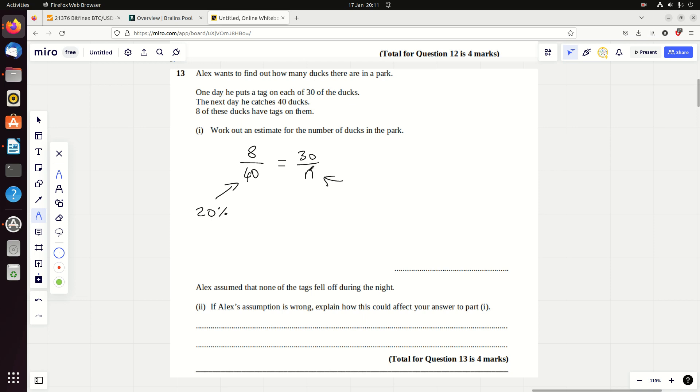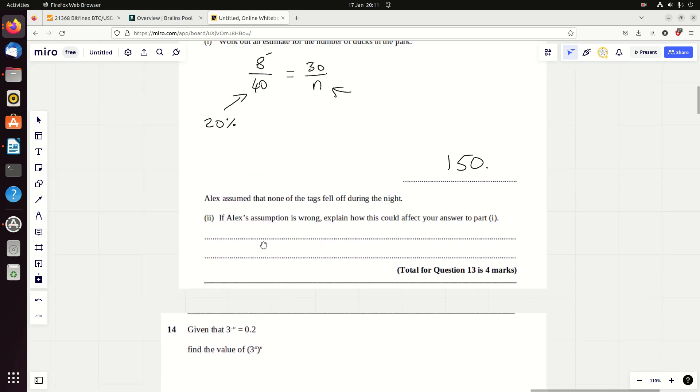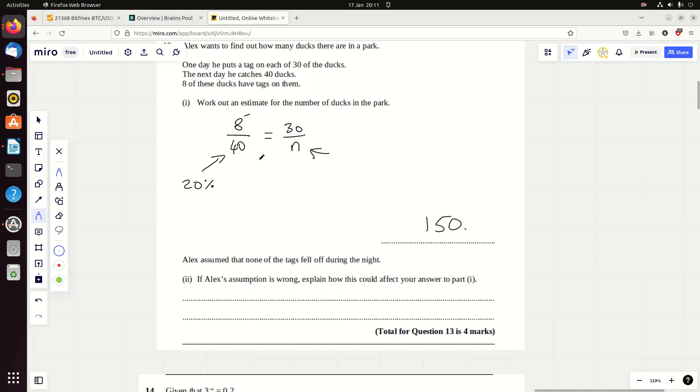When he captures these 40 randomly, 8 of them have been tagged. So that kind of suggests he captured 20% of the ducks yesterday. We just need to make sure these agree. You can see that 8 is 20% of 40. Well, what is 30 20% of? The answer is 150. You can work that out with equivalent fractions. This is a calculator paper, so you can easily work out that you need to times 8 by 3 and 3 quarters, so you need to times 40 by 3 and 3 quarters. 3 times 40 is 120, and 3 quarters of 40 is 30. So you're getting 150. Make sure you're showing enough working. I'm always scared on GCSE that I'm not showing enough.